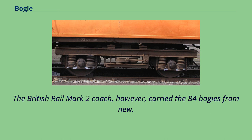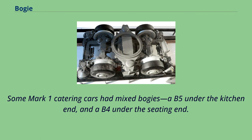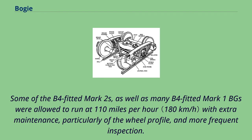The British Rail Mark 2 coach carried the B4 bogeys from new. A heavier-duty version, the B5, was standard on Southern Region MK1-based EMUs from the 1960s onwards. Some Mark 1 catering cars had mixed bogeys — a B5 under the kitchen end and a B4 under the seating end. Some of the B4-fitted Mark 2s, as well as many B4-fitted Mark 1 BGs, were allowed to run at 110 miles per hour with extra maintenance, particularly of the wheel profile, and more frequent inspection.